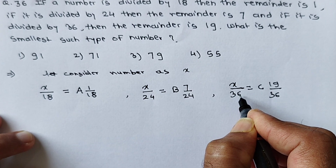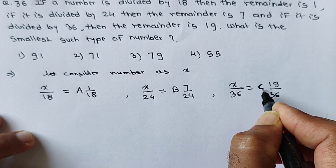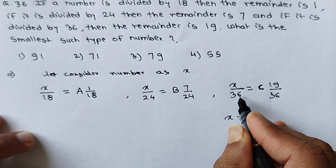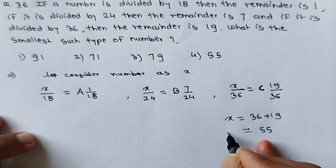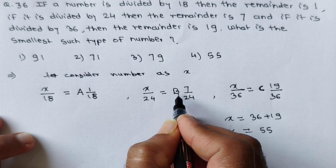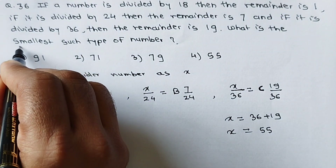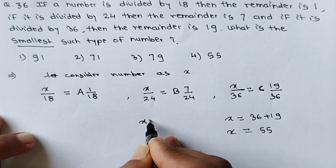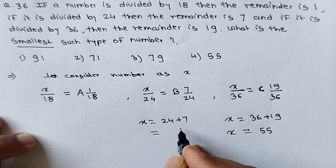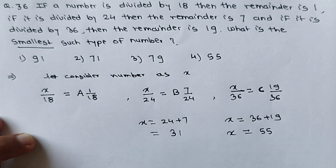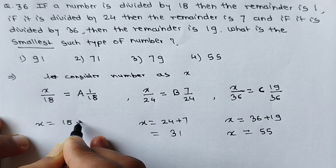The number x must be greater than 36. If c is the minimum whole number 1, then x will be 36 plus 19, which is 55. If b is 1 (minimum), x will be 24 plus 7, which is 31. And if a is 1 (minimum), x will be 18 plus 1, which is 19.